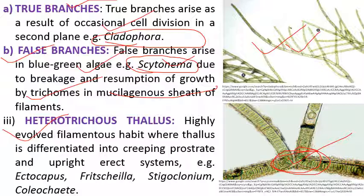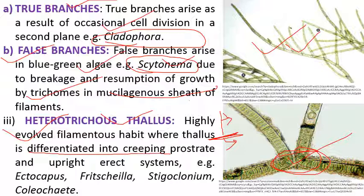The next important form is the heterotrichous form. Hetero means different, trichous means hairs — they have different types of filament arrangement. This is a highly advanced form in which there is one upright/erect system and one prostrate/creeping system. The creeping system runs horizontally over the surface of the substratum, and the upright system grows vertically. Examples of heterotrichous forms are Ectocarpus, Fritschiella, Stigeoclonium, and Cololejeunea.